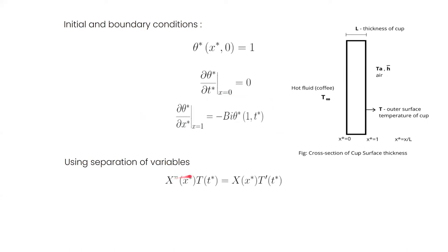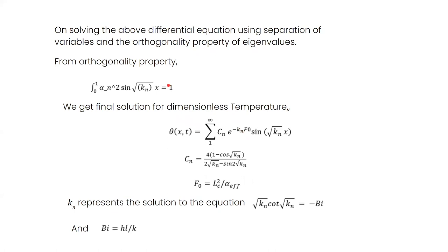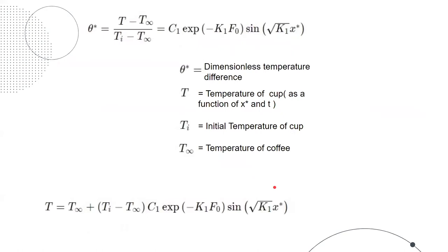We attempt to solve this system of partial differential equation using the technique of separation of variables. We will then use the orthogonality property of eigenvalues to obtain the following solution. Theta as n will have some constants and will be an infinite series. Also, the constants obtained would be directly related to the Biot number of our system. Now in our case, where we assume that the Fourier number is greater than 0.2, we can approximate the infinite series of our temperature to its first term only. If we rearrange that, we obtain the following expression in terms of the real temperature, where T infinity is the temperature of coffee and Ti is the initial temperature of cup.